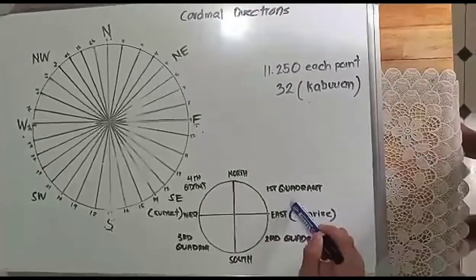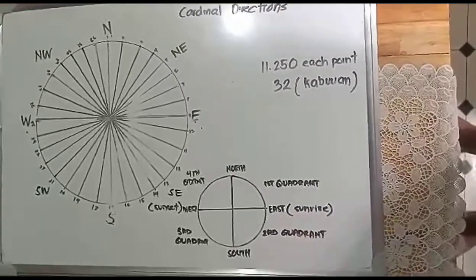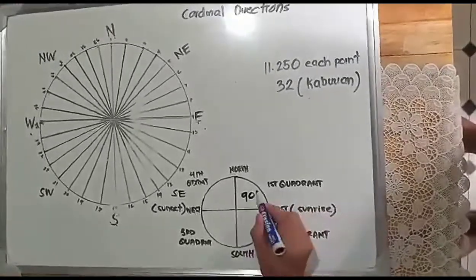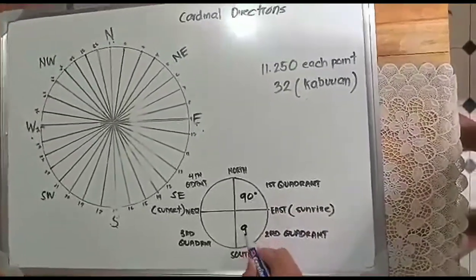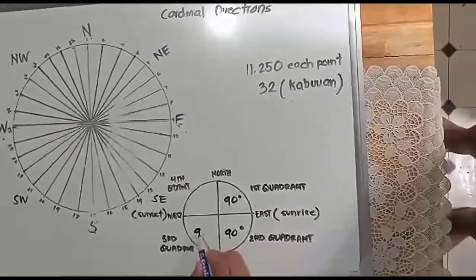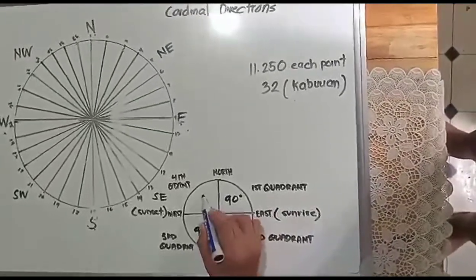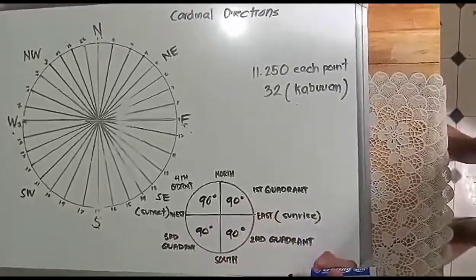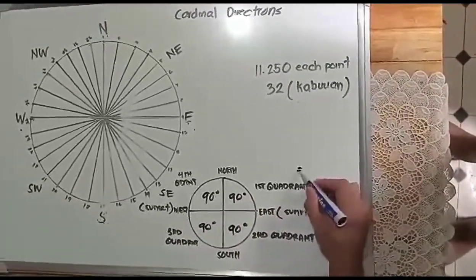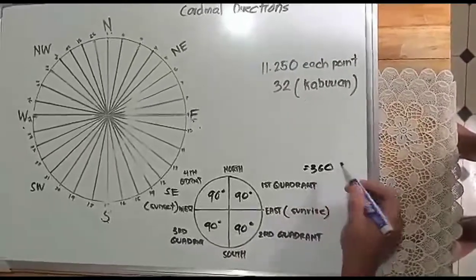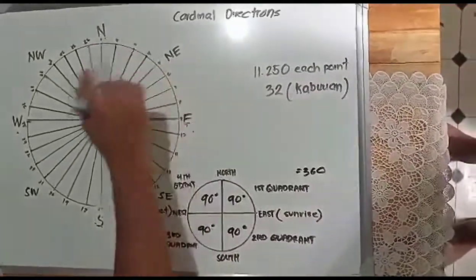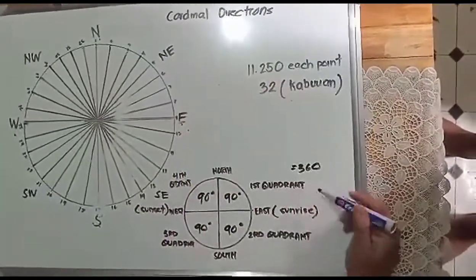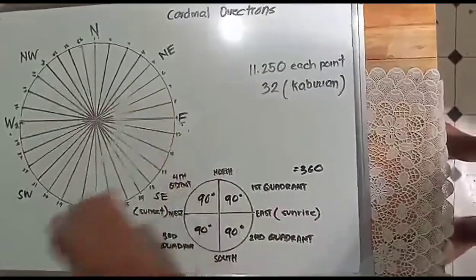The cardinal directions are separated by how many degrees? 90. So first quadrant, 90 degrees. Second quadrant, 90 degrees. Third quadrant, 90 degrees. And the fourth quadrant is 90 degrees. So the whole circle is equivalent to 360 degrees.